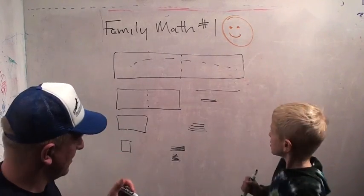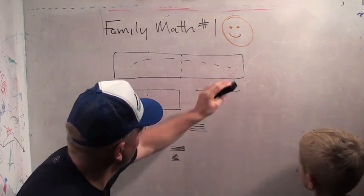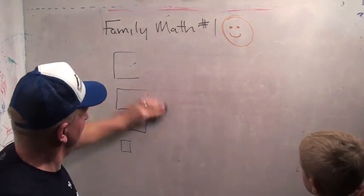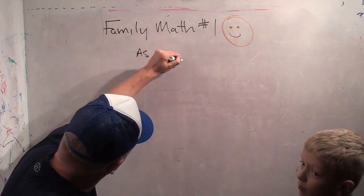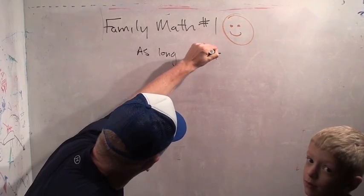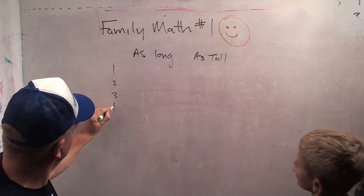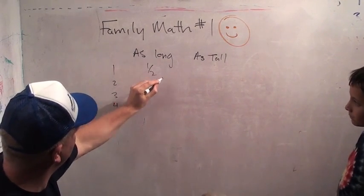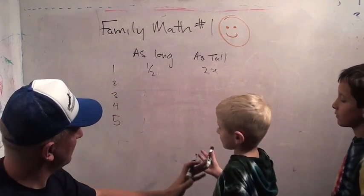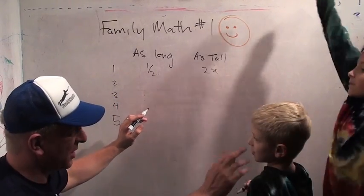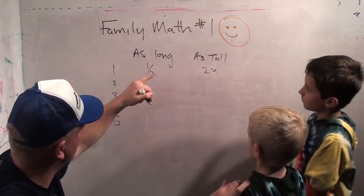So we're going to do as long as tall. One fold, two folds, three folds, four folds, five folds. So it's half as long after one fold, it's half as long and two times as tall. After two folds, it's... How much? I know you know. How much? After one fold, it's half as long and two times as tall. After two folds, it's...